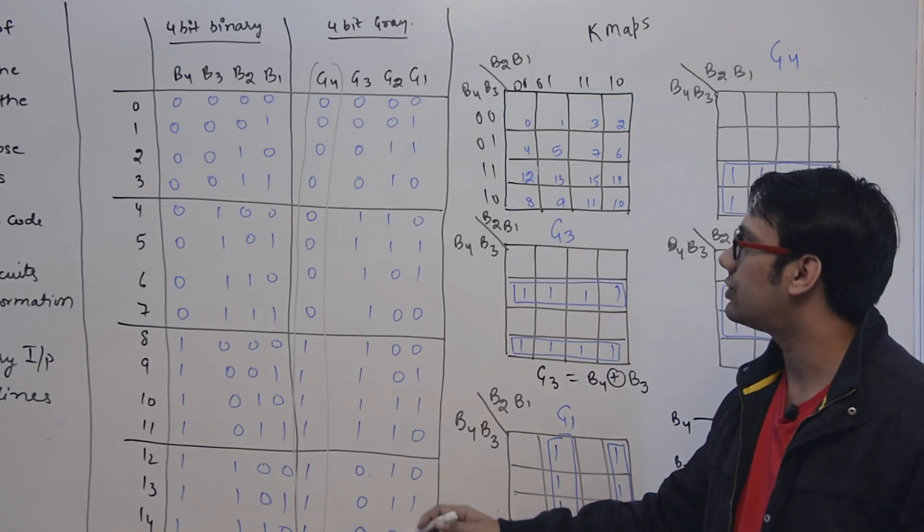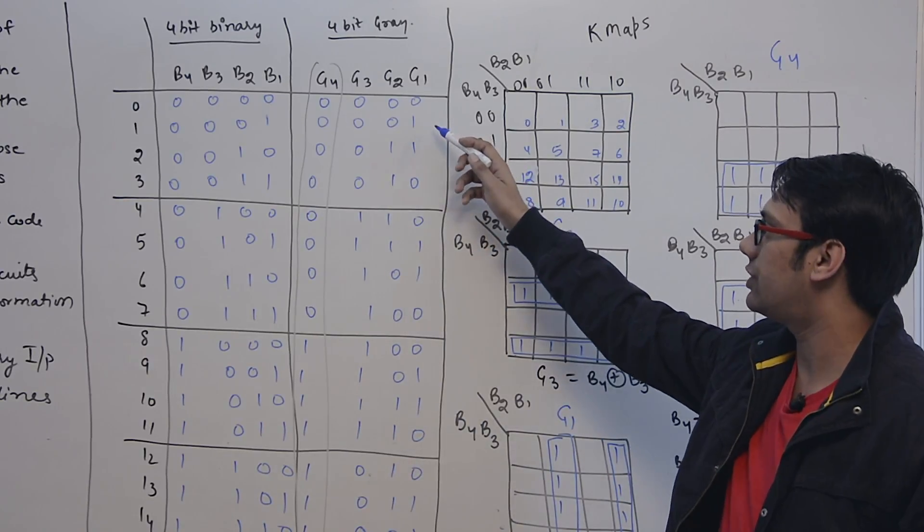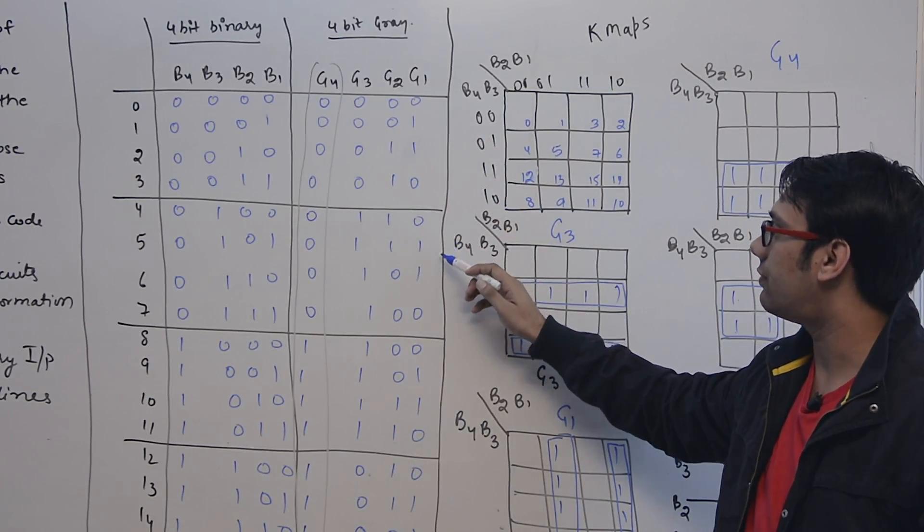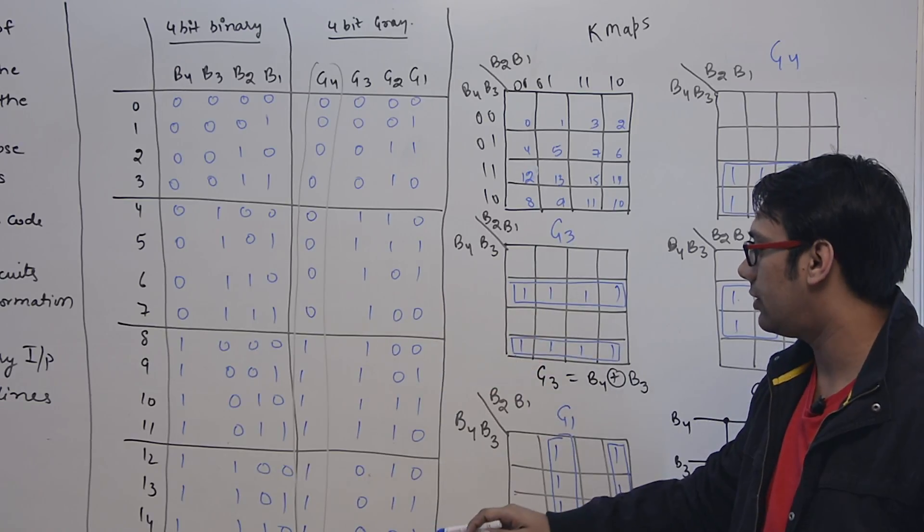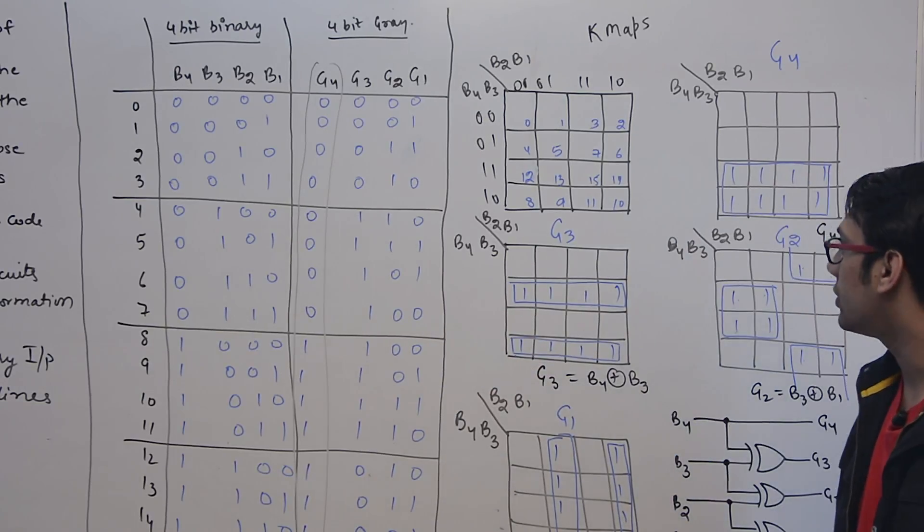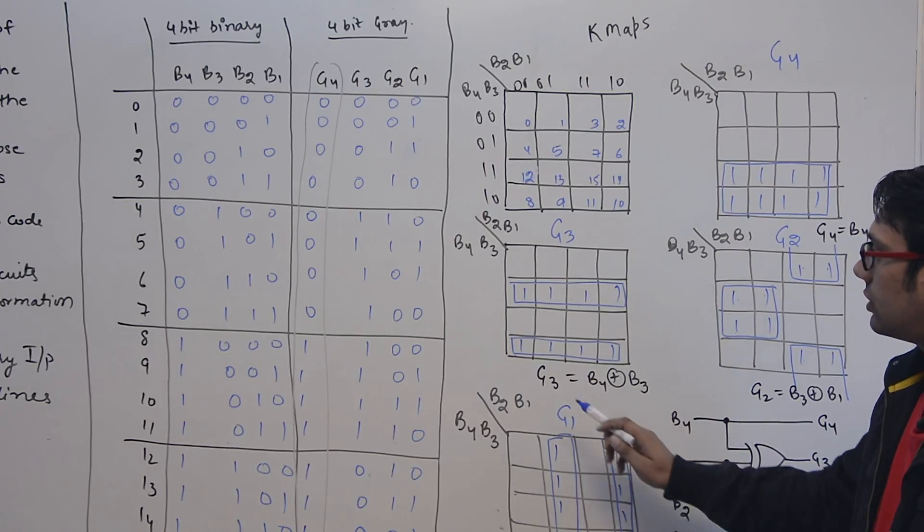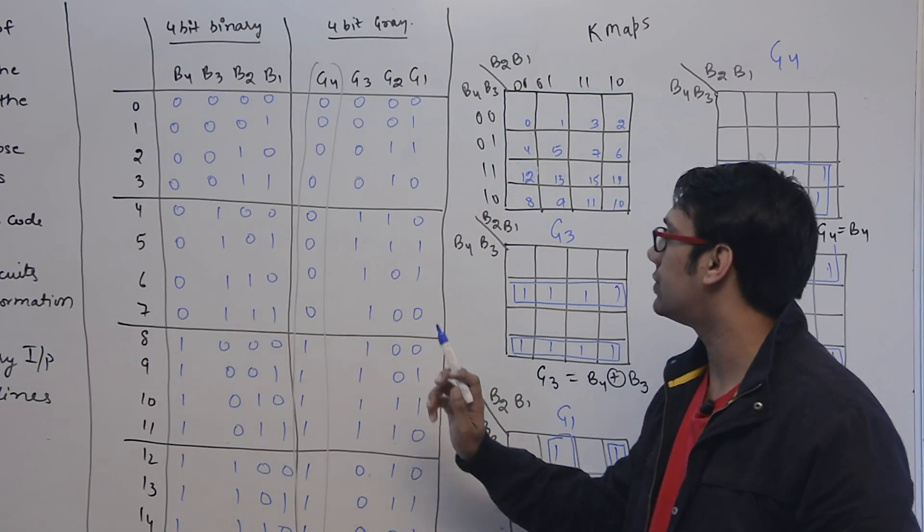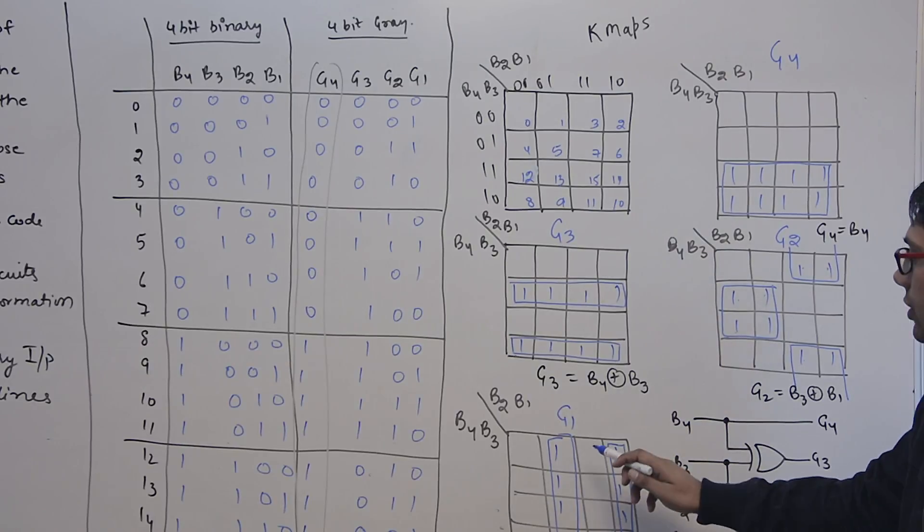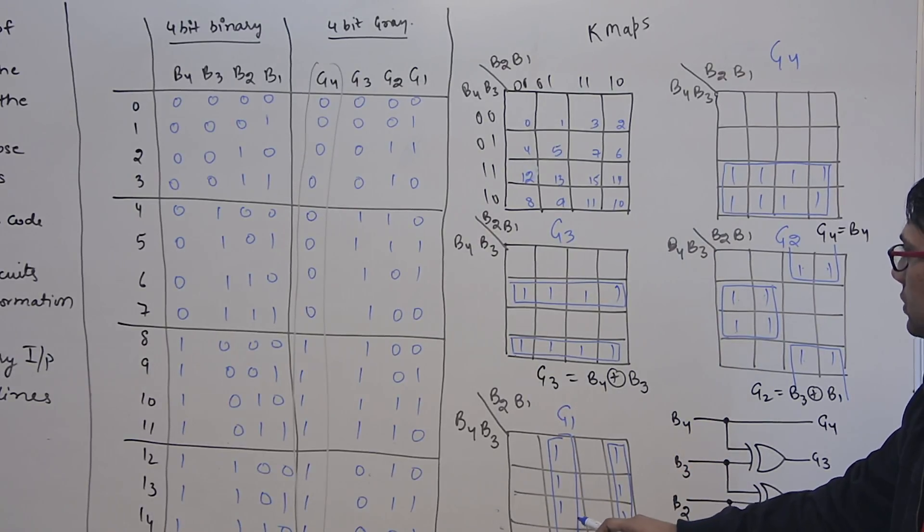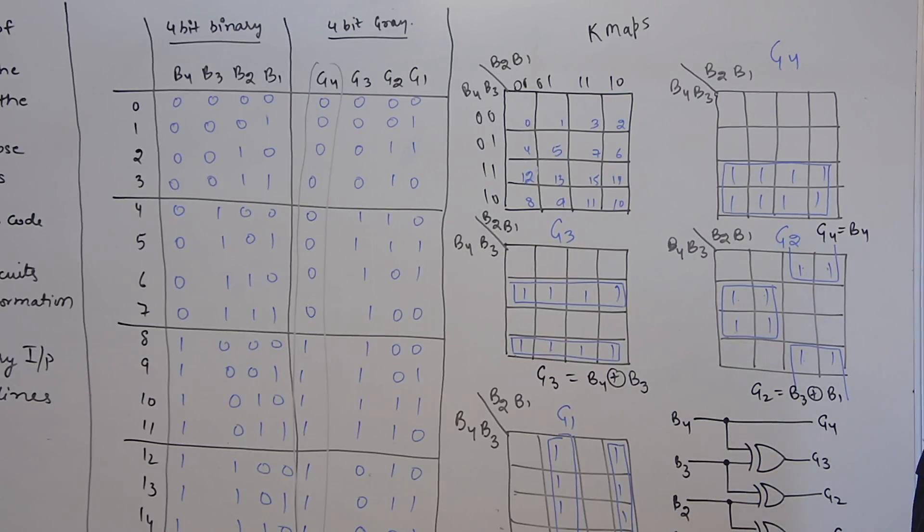And then again, you can get for G1. G1 is true at 1, 2, 5, 6, 9, 10, 13, 14. So it is 1, 2, 5, 6, 9, 10, 13, 14.